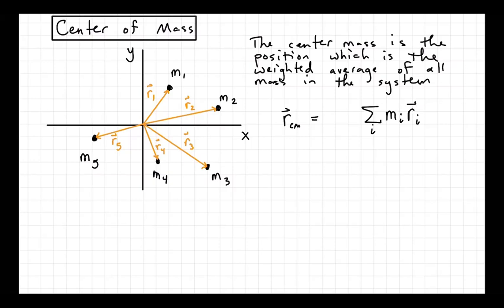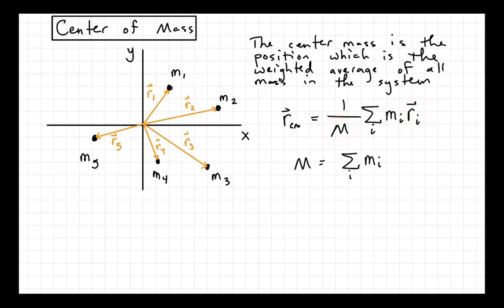Summed over everything in the system — so in this case we'd be summing over one, two, three, four, five. But in general it could be any number. And then divided by the total mass of the system. M here I could write also as a sum where it's the sum of all the masses, summing over i. So in this case that would be m1 plus m2 plus m3 plus m4 plus m5.